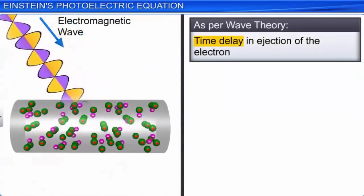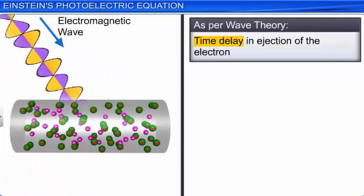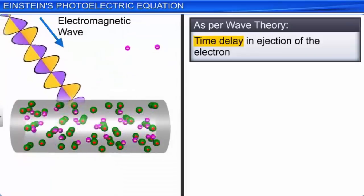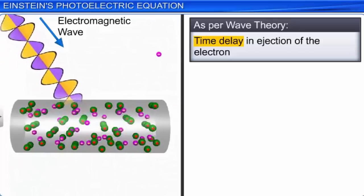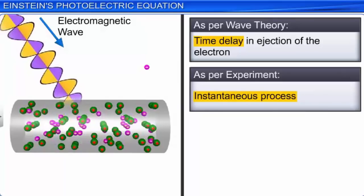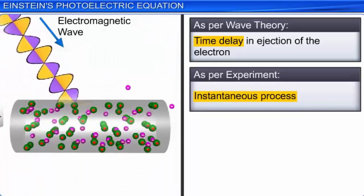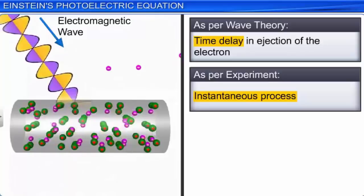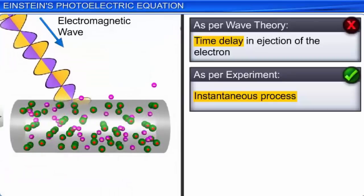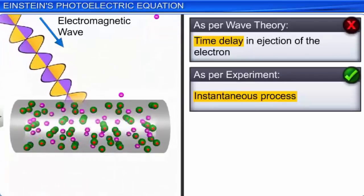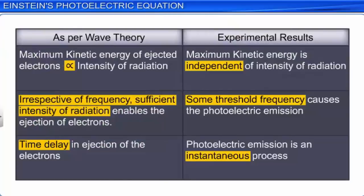According to the wave theory, there is a time delay between the incidence of the radiation on the metal surface and the ejection of the electrons from the metal surface. Whereas, photoelectric effect experiments show that electron ejection is an instantaneous process when the radiation is incident on the metal. This contradicts the wave theory. From these facts, we can conclude that wave theory fails to explain the experimental results of the photoelectric effect.